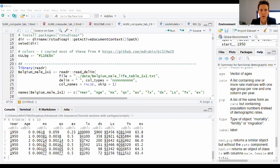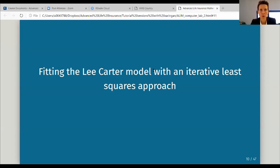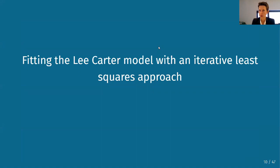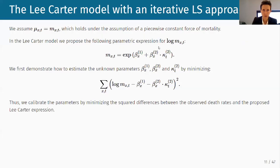We're now going to use this data set to work with the Lee-Carter model. First, I'm going to calibrate it with what I call an iterative least squares approach — one of the calibration strategies we also discussed in class. Let me show you how to put that together in R.